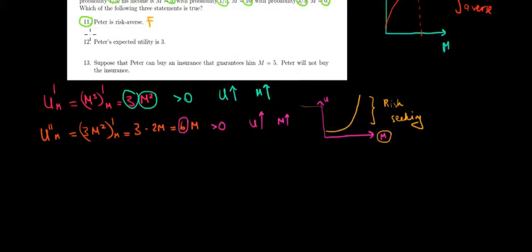Let's have a look at question 12 now. So the expected utility of this gamble is 3.